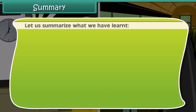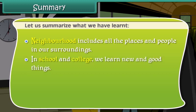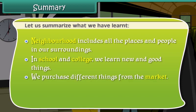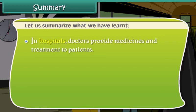Let's summarize what we have learned so far. Neighborhood includes all the places and people in our surroundings. In schools and colleges, we learn new and good things. We purchase different things from the market. People receive and send letters through the post office. In hospitals, doctors provide medicines and treatment to patients.